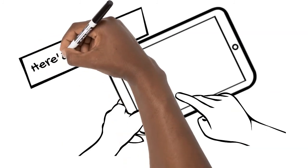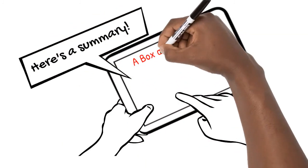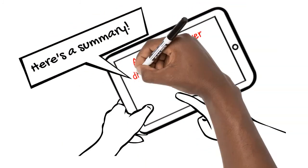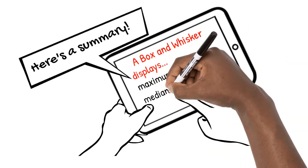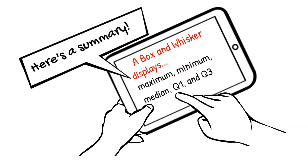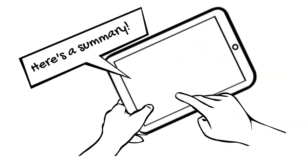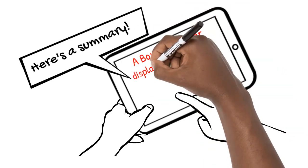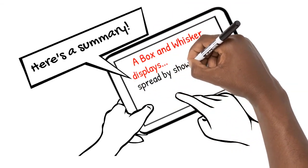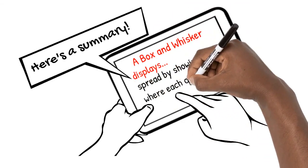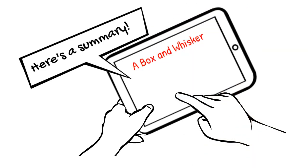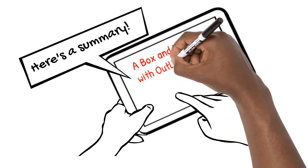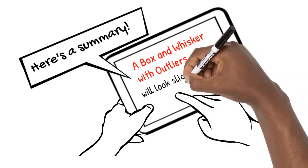Here's what we've learned in this video. A box and whisker displays the maximum, minimum, median, lower quartile, and upper quartile. A box and whisker displays the spread, showing where each quartile lies. A box and whisker with outliers will look slightly different.